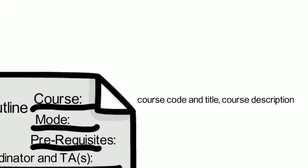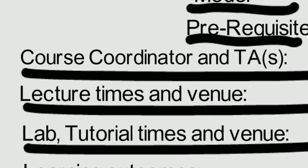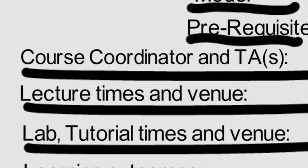In the course outline you will find the course code and title, course description, and the mode through which it is offered. Prerequisites are courses which you should have completed prior to the course. Detailed information of the course coordinator and teaching assistants would be provided, including building and office number and his or her contact info.